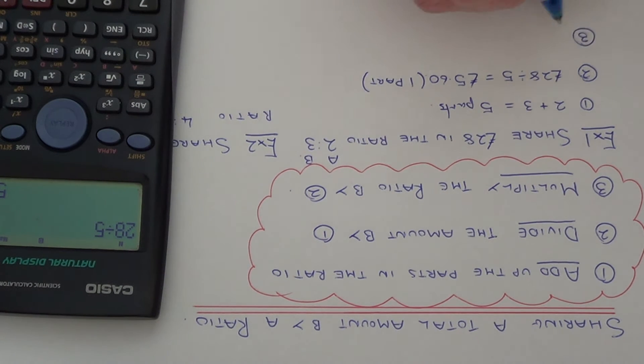So we can now work out what each person receives. So person A is getting two parts of the money. So we need to do two of these £5.60. So two times £5.60. Well that will give us £11.20.